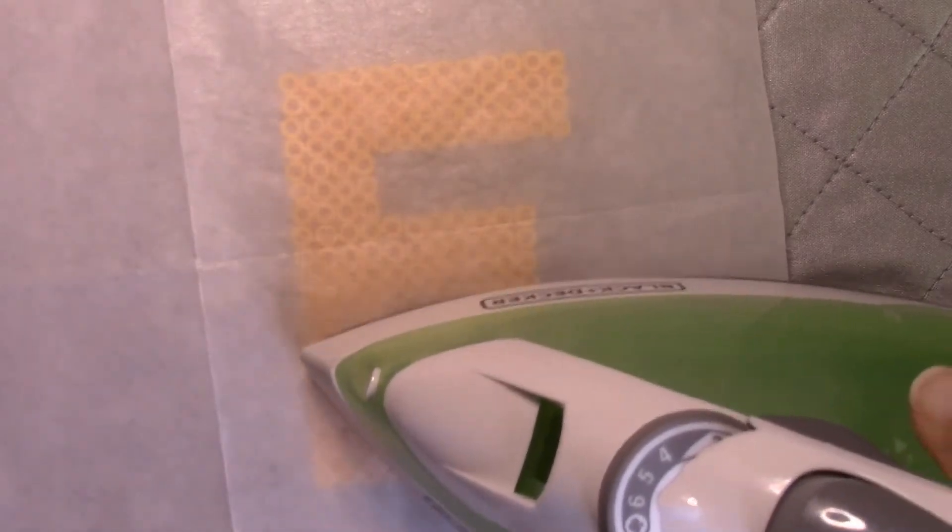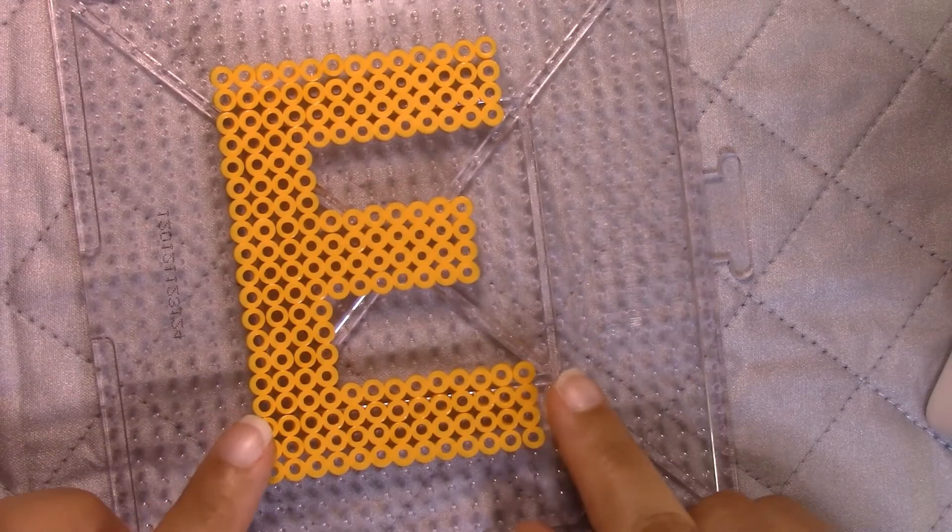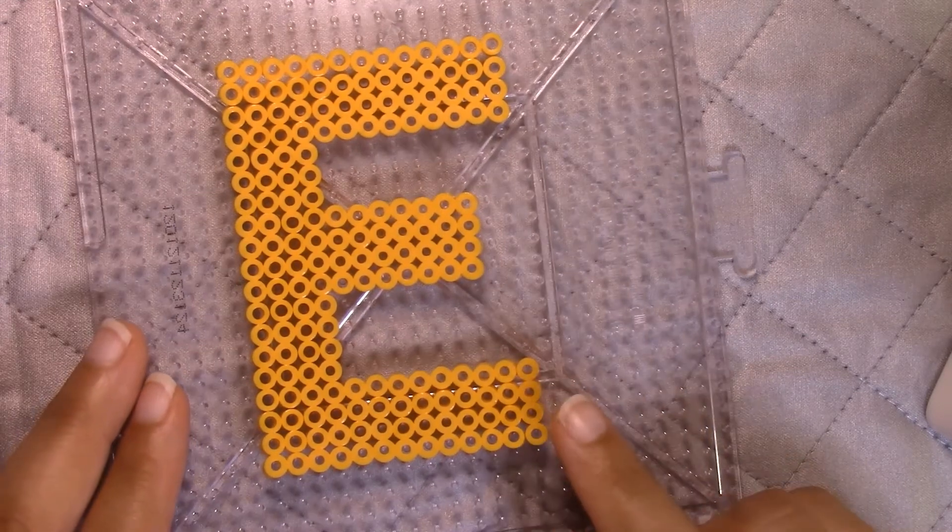It should peel right up. If you have any beads that are sticking to your parchment paper, carefully put it back down and iron over that section again. Once you've peeled back your paper and you're satisfied with the fusing here, then you'll want to flip it over.